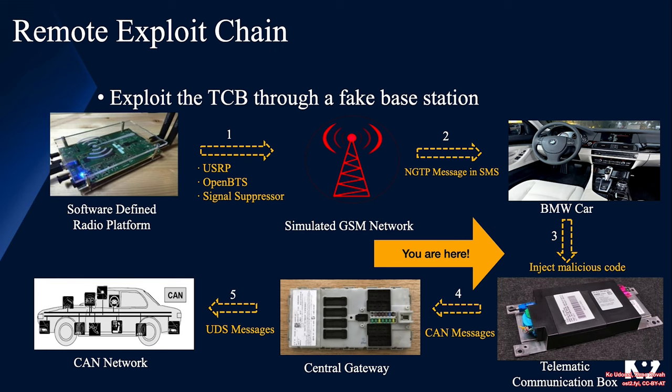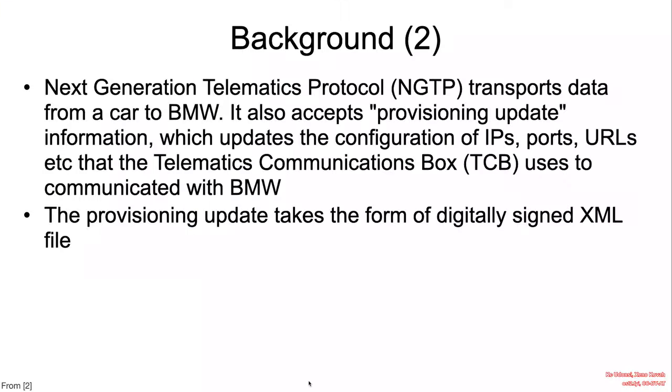The vulnerability is reachable via a simulated GSM network — this one prompted looking up software-defined radio, USRP, OpenBTS, and all that. The telematics service provides the BMW connected vehicles with e-call and b-call.